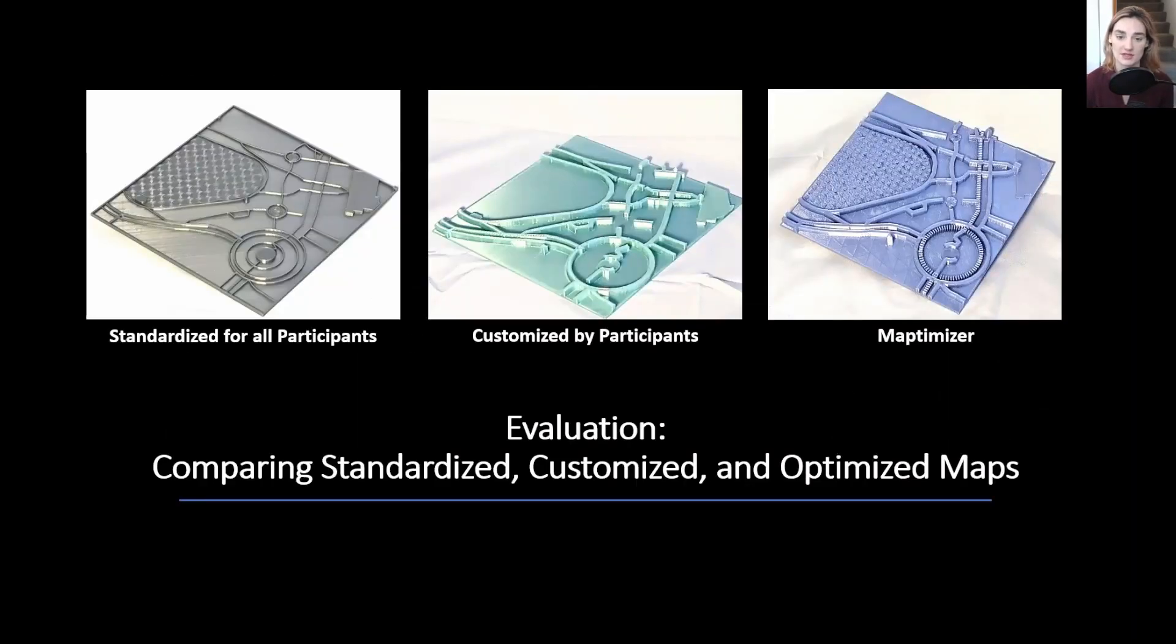In order to evaluate Maptimizer, we've done a small test using three different conditions of tactile maps. The first are standardized maps, which were the same across all users and generated using a system called TouchMapper. The second were maps that were customized by participants based off of a small Google Form survey of their interests in the particular locations. And the ones generated with Maptimizer using the same information provided in that form.